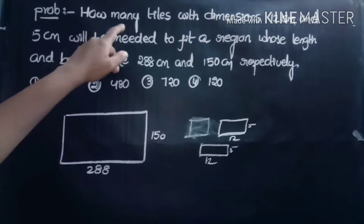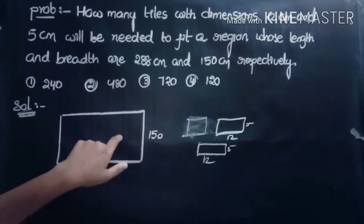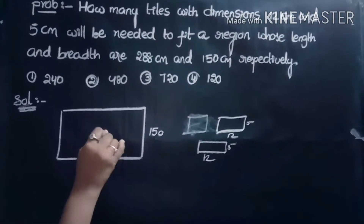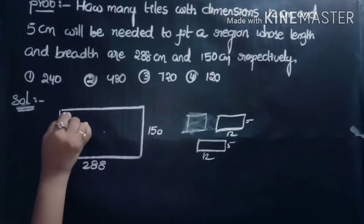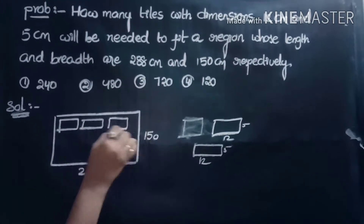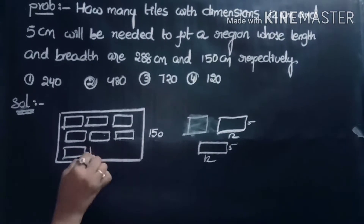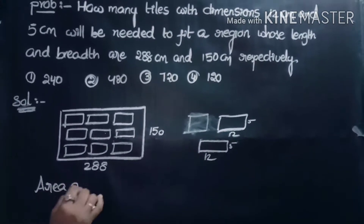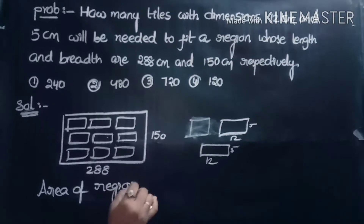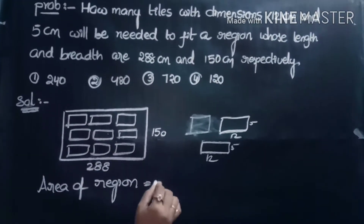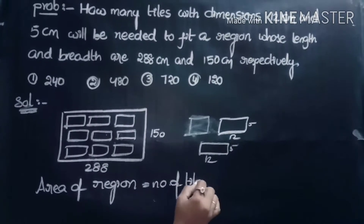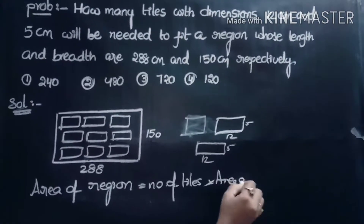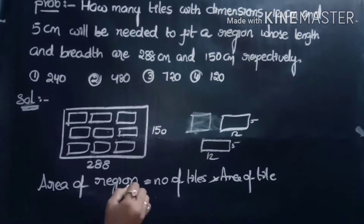The question is: how many tiles are needed to fit the region? We know that the area of the region equals the number of tiles multiplied by the area of one tile. The region is in the form of a rectangle, so the area of the region equals length into breadth, which is 288 into 150.